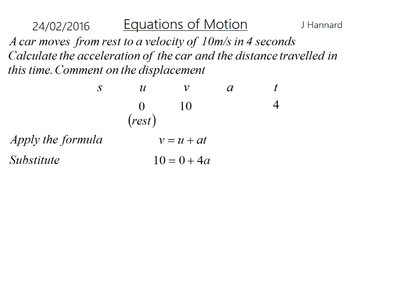Now I can rearrange to get that. So A is going to equal 2.5, because 10 minus 0 is just 10, and 10 divided by 4 is 2.5, metres per second squared is the units for acceleration.